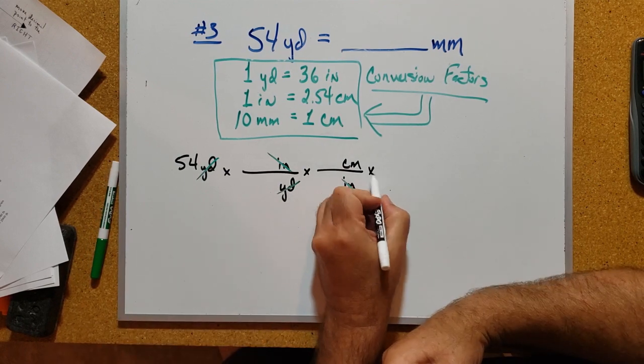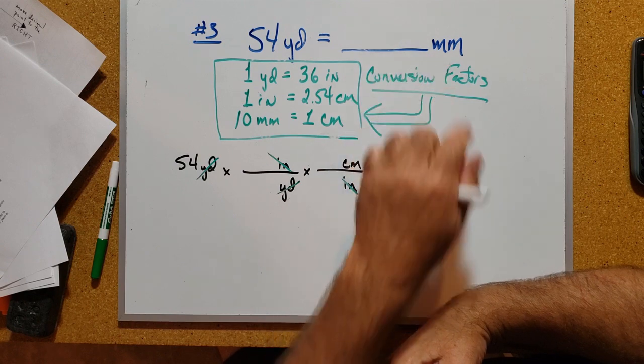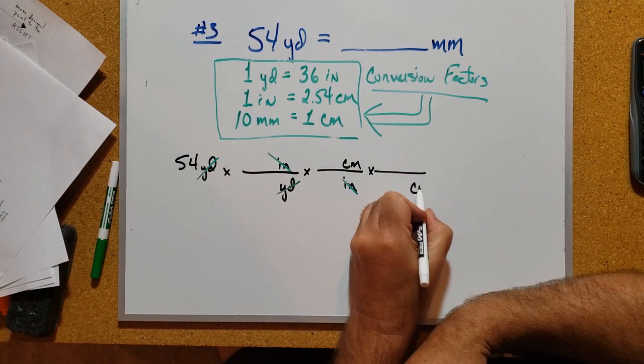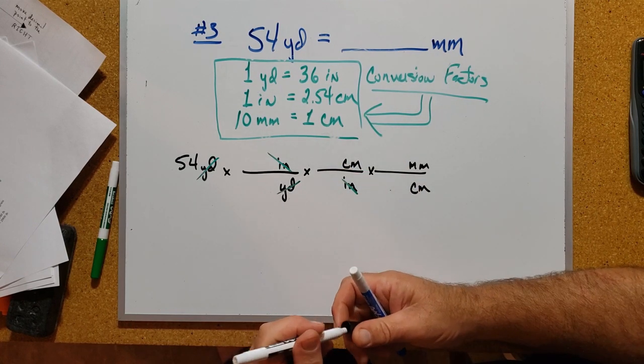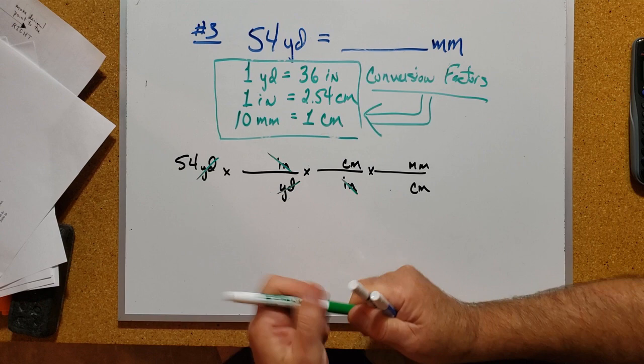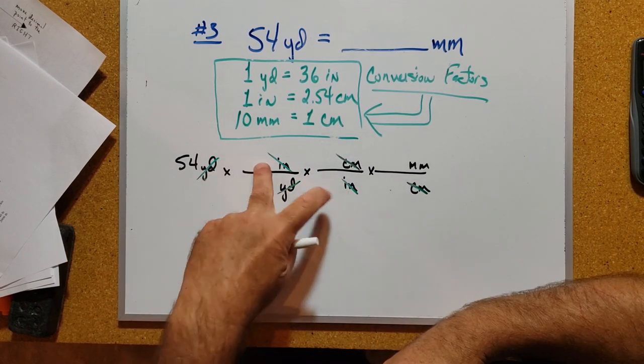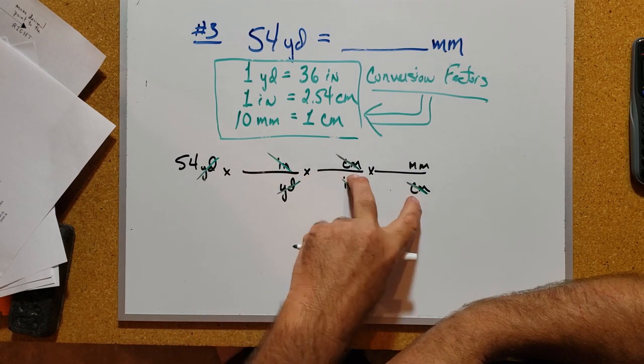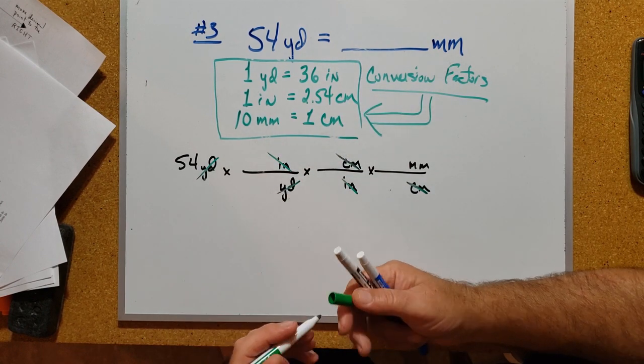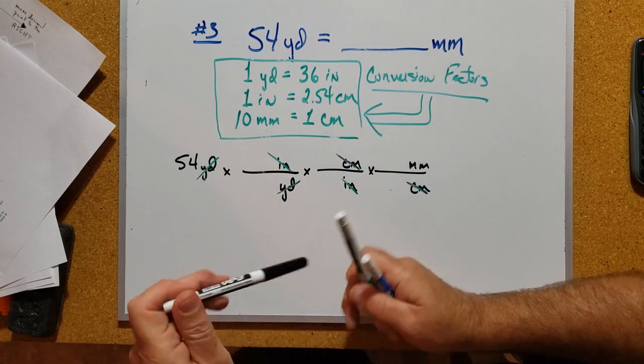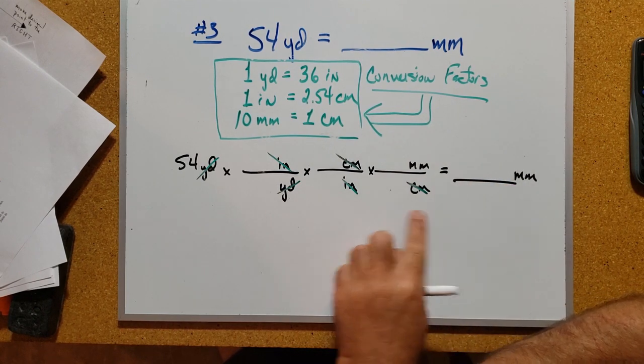And then from centimeters I was going to go to millimeters. That means I'm done putting an equation together, and it's going to be set up with millimeters on top, centimeters on bottom, for the sole purpose of canceling the centimeter units. Yards canceled, got rid of those. Inches canceled, got rid of those. Centimeters canceled, got rid of those. I'm left with millimeters - yay! That's what I wanted. So that means it's time for me to put in my equal sign. There'll be a certain number of millimeters that come out of this equation.